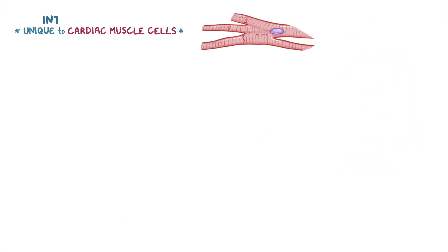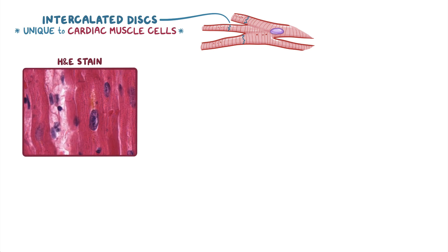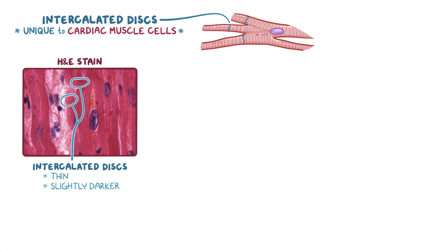Also unique to cardiac muscle cells are the intercalated discs that connect the neighboring cardiomyocytes. With an H and E stain, the intercalated discs are seen as thin, slightly darker lines that are perpendicular to the direction of the muscle cell.